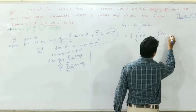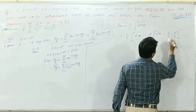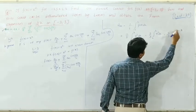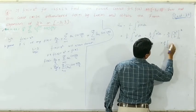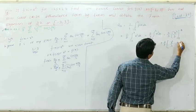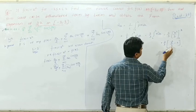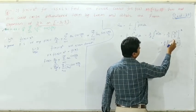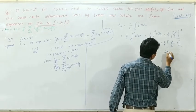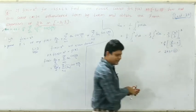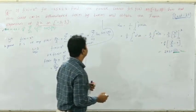Integrating x² gives (2/3)·[x³/3] from 0 to 3. Putting in the upper limit: (2/3)·(3³/3) = (2/3)·(27/3) = (2/3)·9. The 3s cancel and we get (2/3)·9 = 6. Therefore a₀ = 6.